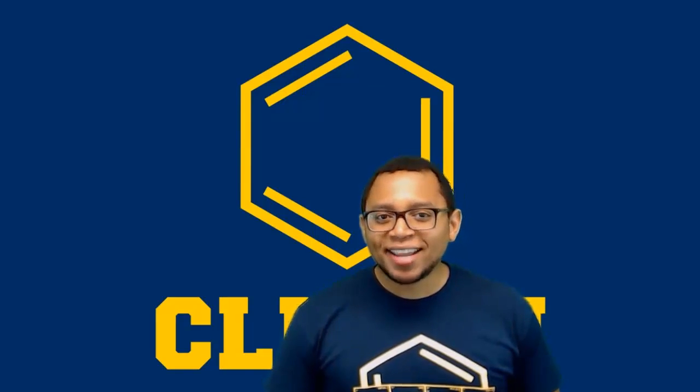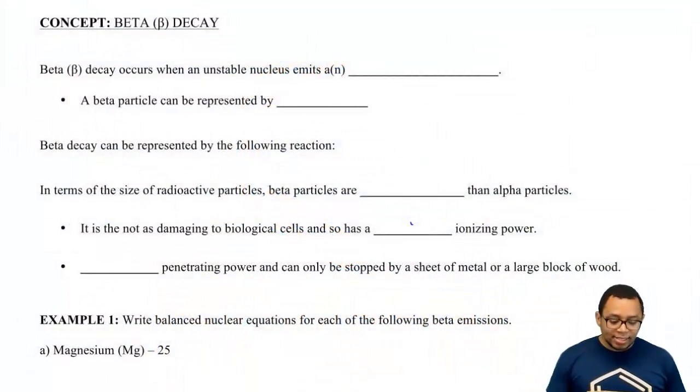Hey guys, in this new video, we're going to take a look at beta decay. We're going to say that beta decay occurs when an unstable nucleus emits an electron.